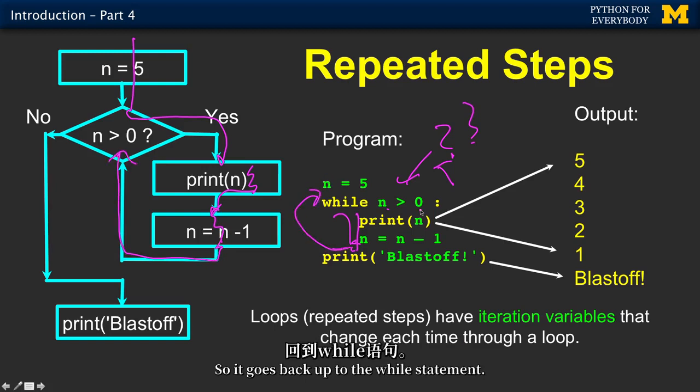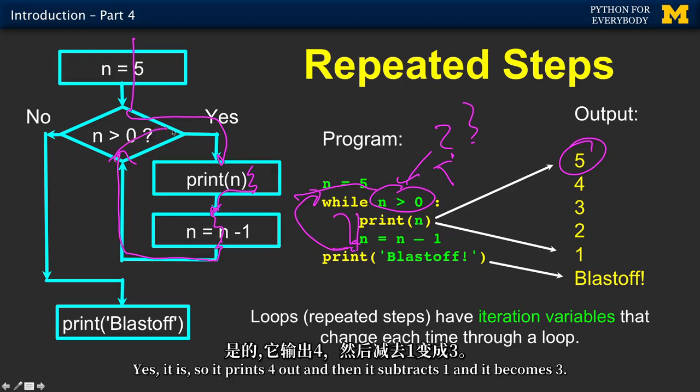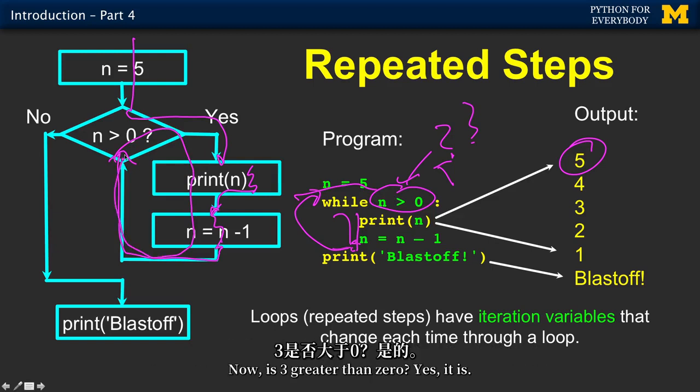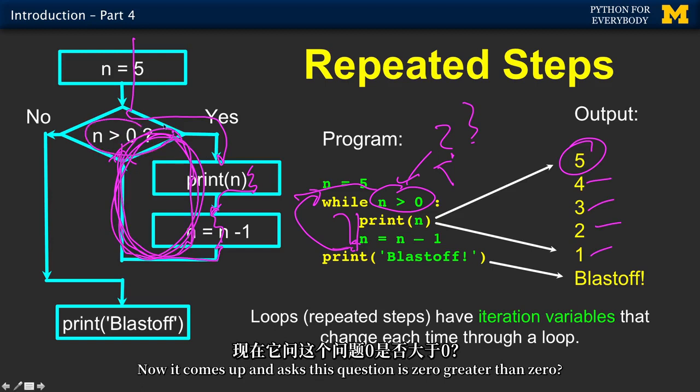Then it re-evaluates this question, is four greater than zero? Yes, it is. So it prints four out, and then it subtracts one, it becomes three. Now is three greater than zero? Yes, it is. And so it goes four, three, two, one. Then it comes through and it prints one, and then it subtracts one from it, so it becomes zero. Now it comes up and asks this question, is zero greater than zero?